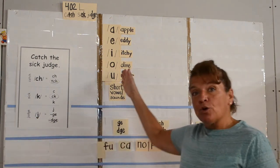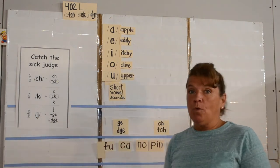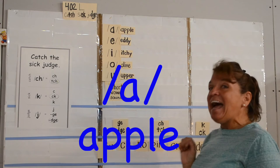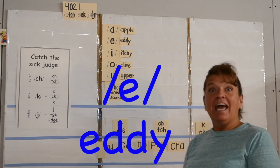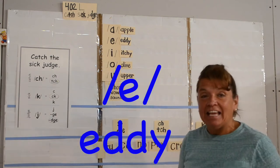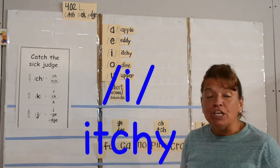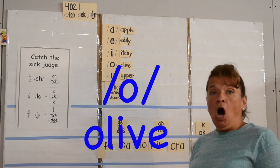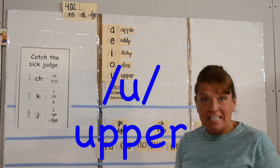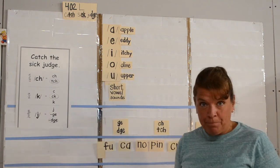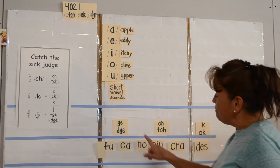Remember what your short vowel sounds are: ah as in apple, eh as in eddy, ih as in itchy, ah as in olive, and uh as in upper. Let's take a look at these.